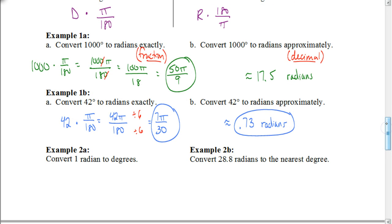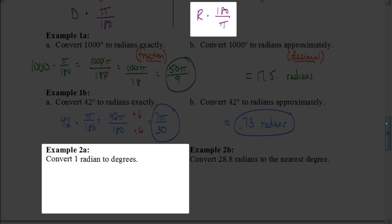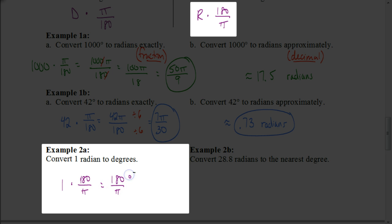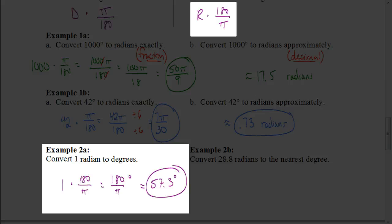What if we have to convert from radians to degrees? We multiply by 180 over π. So for 1 radian, multiply by 180 over π to get 180/π degrees. When thinking about degrees, we don't include π — we always write degrees as a decimal. On your calculator, 180 divided by π gives approximately 57.3 degrees. So for degrees, never leave π in your answer — just write it as a decimal.